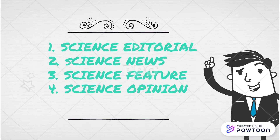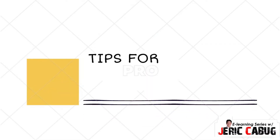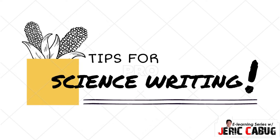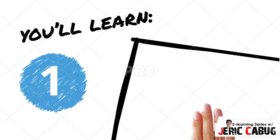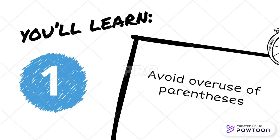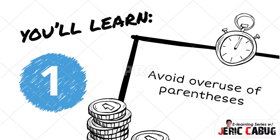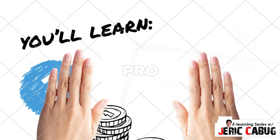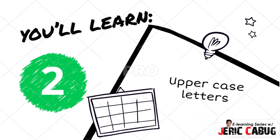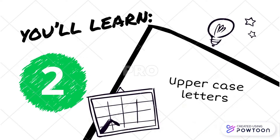Now, in order for you to write an effective and efficient science and health article, let me give you the tips for science writing. First, avoid overuse of parentheses — only use parentheses to make an extra remark every once in a while. Number two is uppercase letters. There are few rules to follow when using capital letters: titles and subheadings of articles, titles of books and journals, and names of institutional departments should begin with a capital letter.